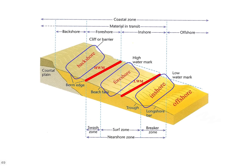To put those into context you can see them here in this diagram. Just check you know the order they would come in. The sea would obviously be coming from this direction. I wouldn't worry too much about the other annotations here, but definitely the ones in red — just check you would know where they are roughly on a diagram.